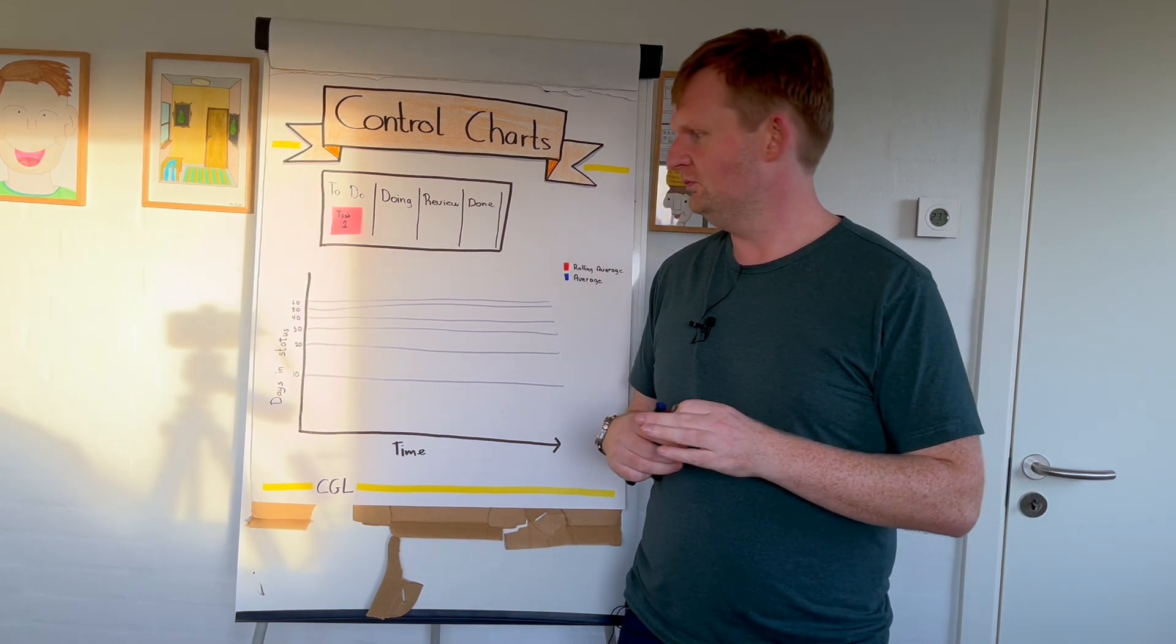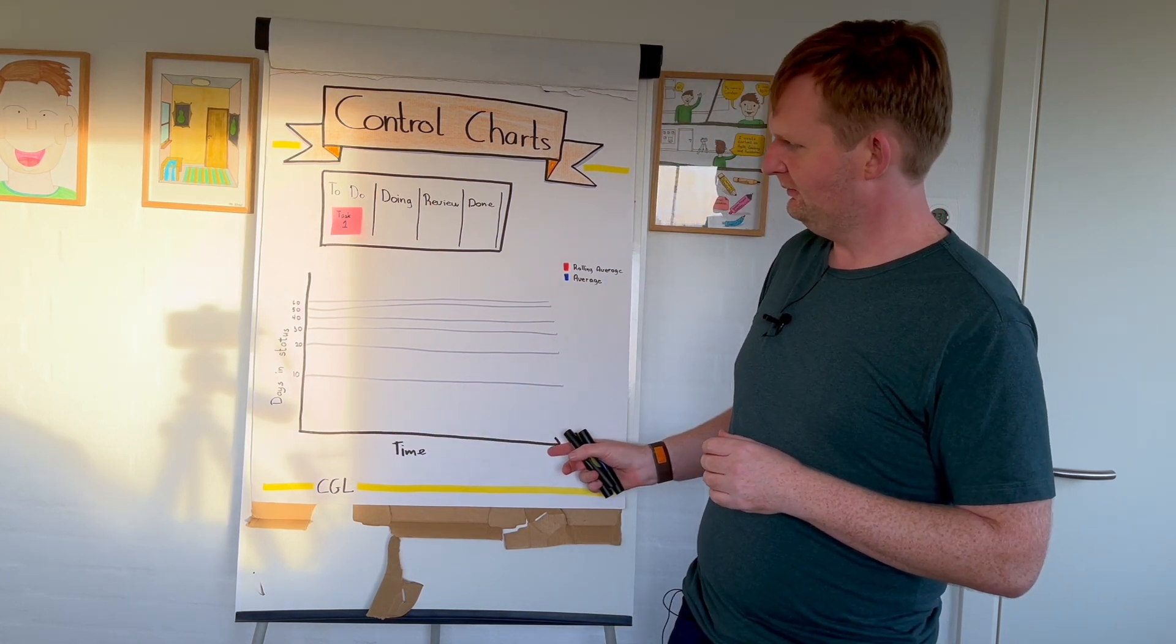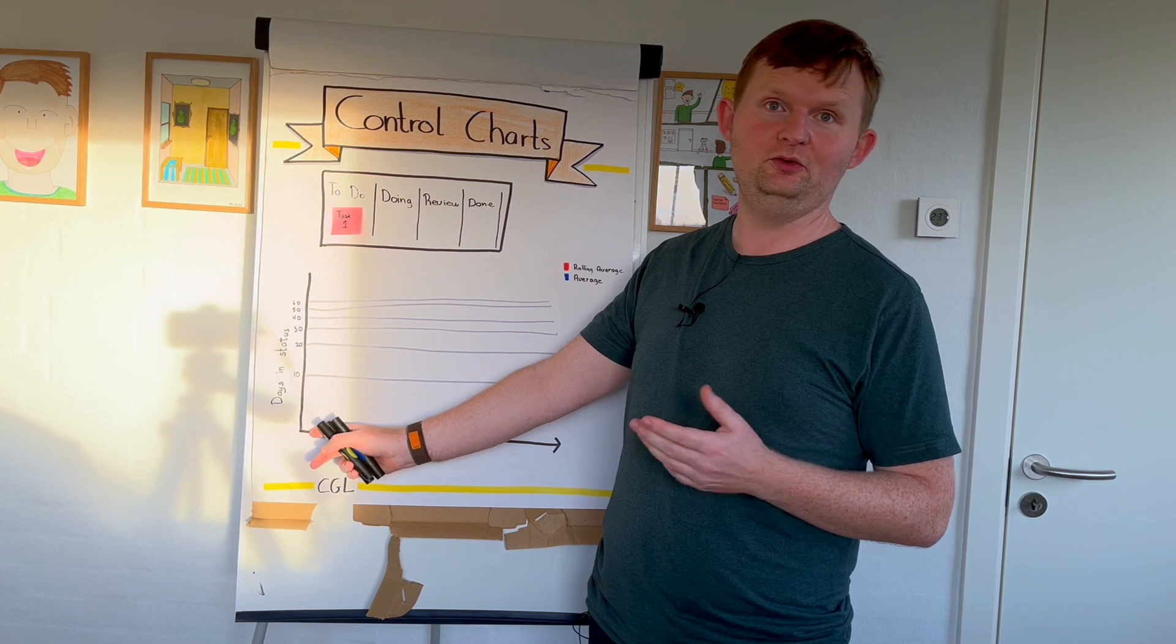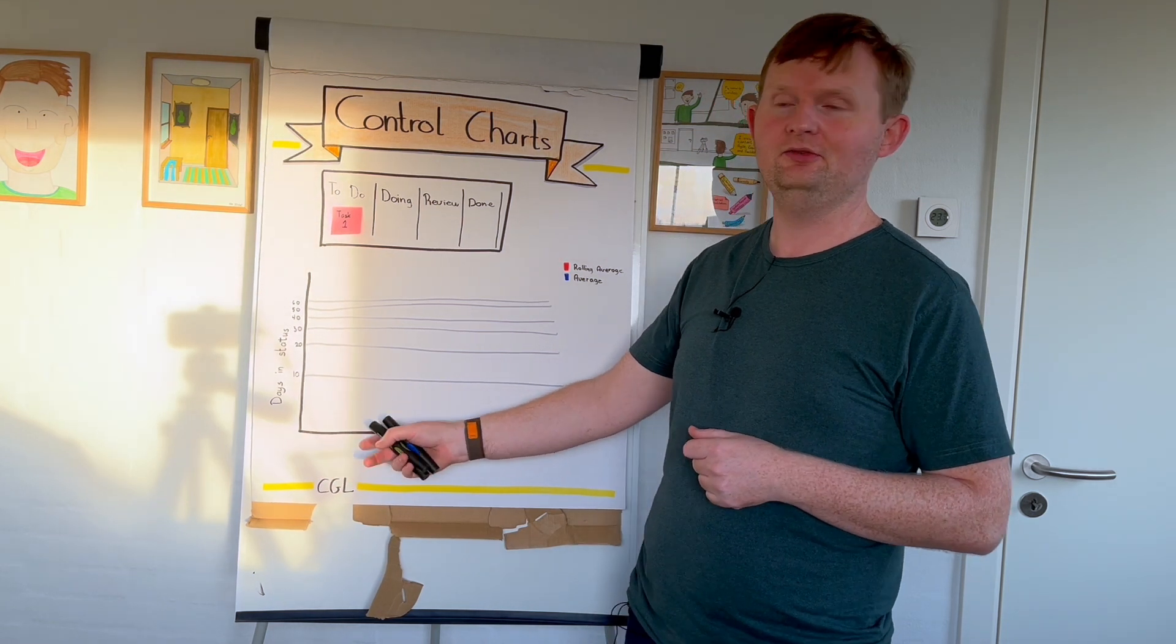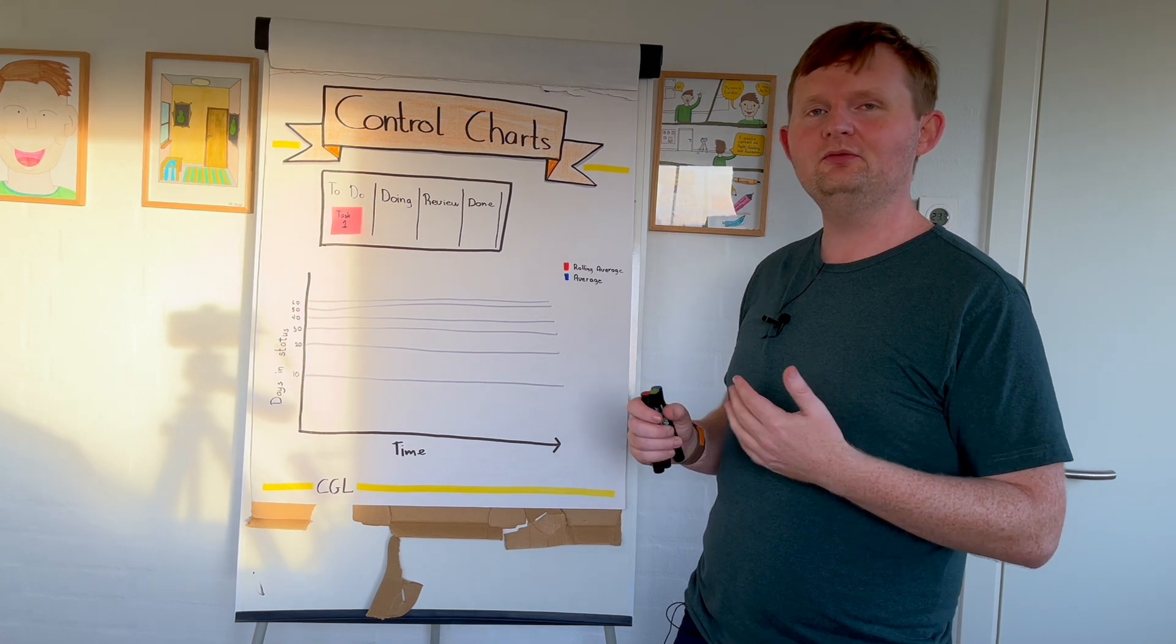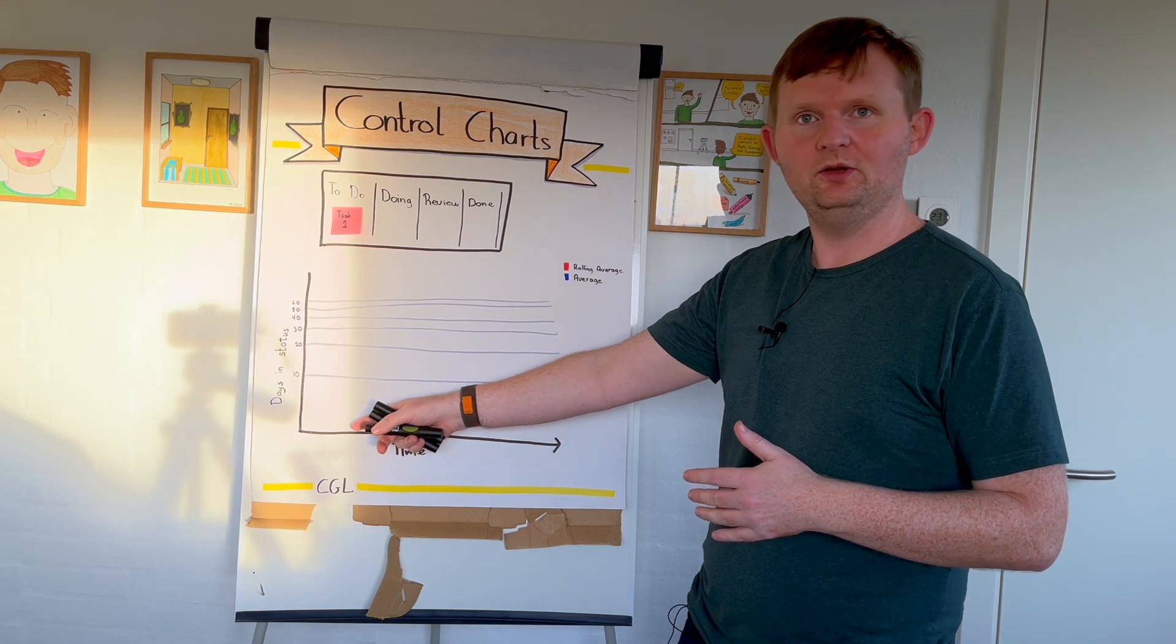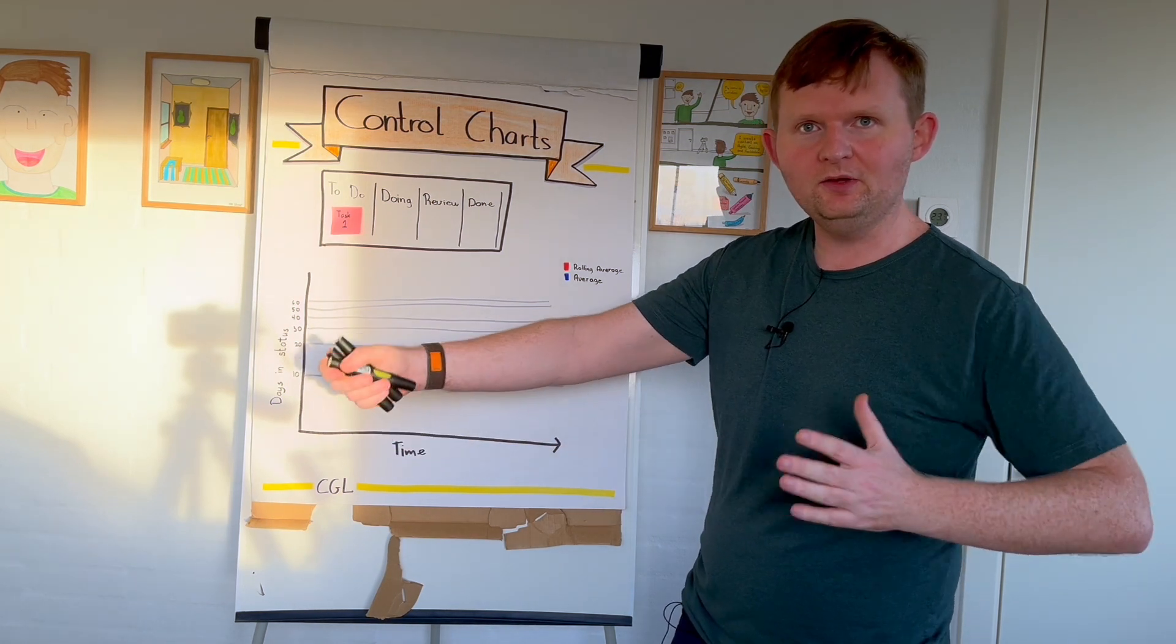What you do is you have a graph like this, so you have time on this axis—1st of January, 2nd of January, and so on—in a time span here. I usually do it if we have been running rather consistently and steady for some time, so maybe looking back two or three months just to get some history, some track record into it.